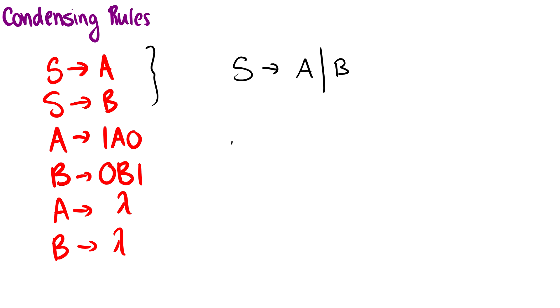So now for A, well we have A goes to 1A0 here. The other possibility is that A just goes to lambda and terminates. So we can condense it like A goes to 1A0 or lambda.